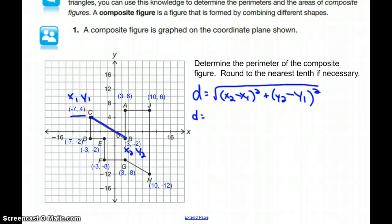So substituting in, I have the square root—x2 is 3, so 3 minus x1 is negative 7, so 3 minus negative 7 squared plus y2 is negative 2, so negative 2 minus y1 being 4. So I have negative 2 minus 4 quantity squared.